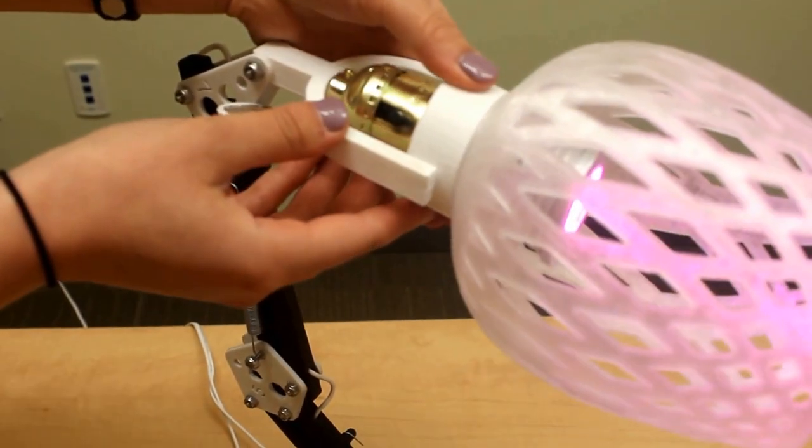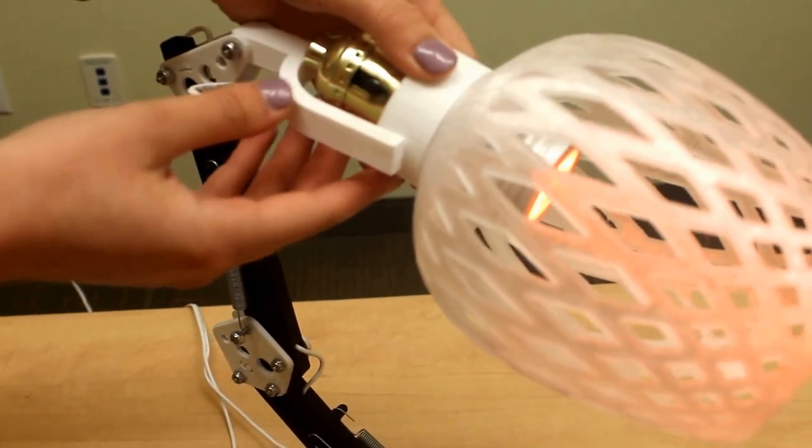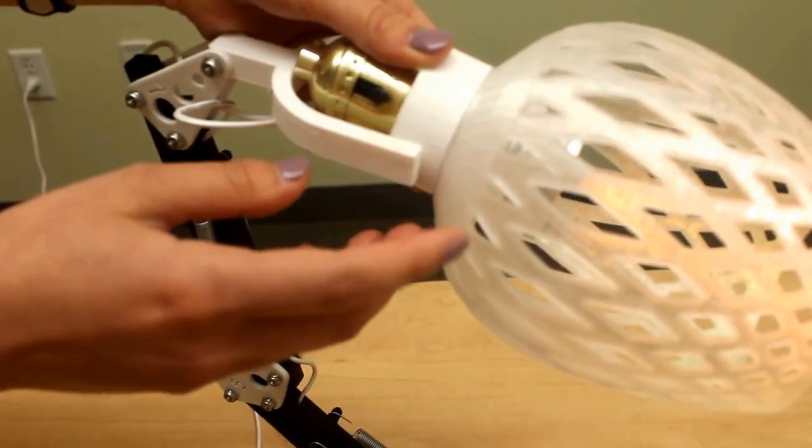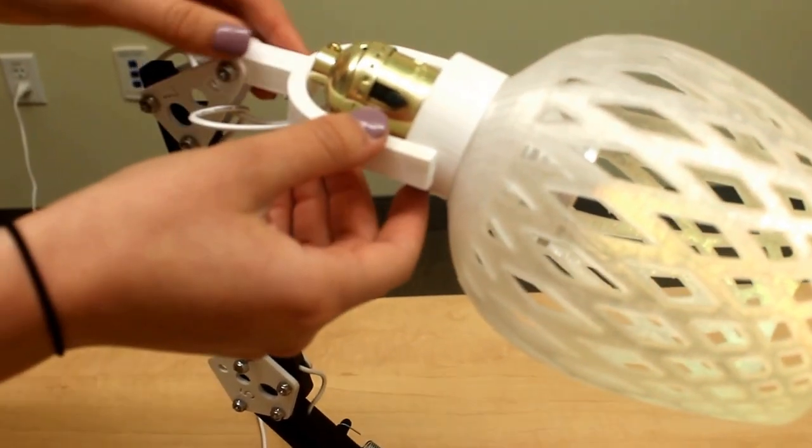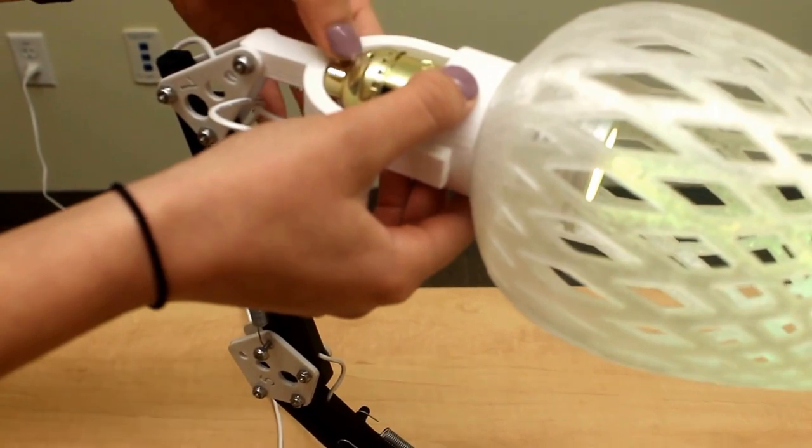The lampshade connector was designed to support the weight of the lampshade and the light bulb itself with a snap-fit connection into the lampshade. It's also designed to accommodate the size of the light bulb holder.